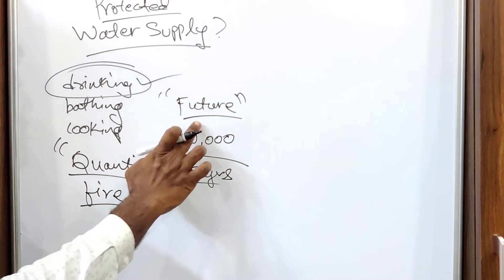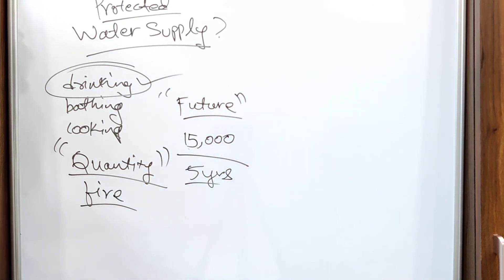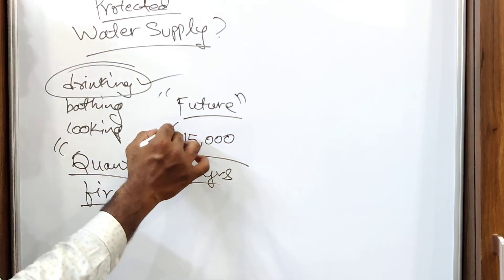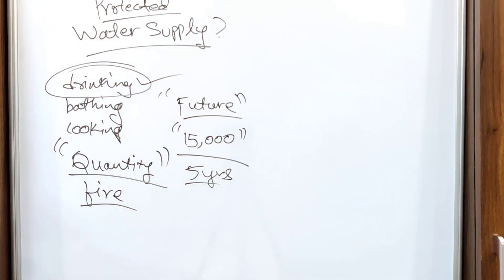maybe the population may be attacked by 5 more thousand or 15,000. Then the die of the pipe we laid and the overhead tanks may go in vain or may fail to meet the demand of 15,000 people. So we estimate or we forecast the population for a design period of 20 years, 30 years.